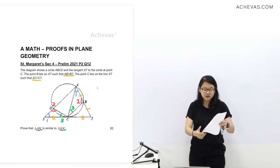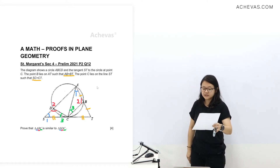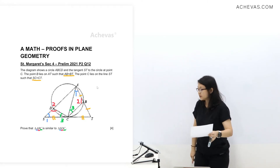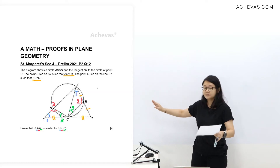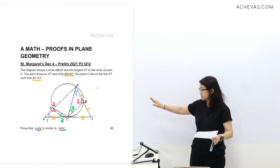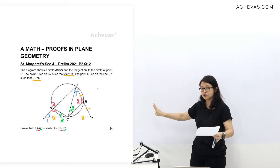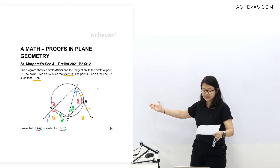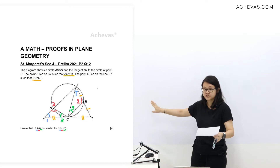We're going to prove that triangle ABC is similar to triangle SDC. I have labelled the angles in colour, labelled 1 to 1, 2 to 2, and 3 to 3 — these are the angles we're going to prove are the same. We're going to use AAA to prove similar triangles in this case.